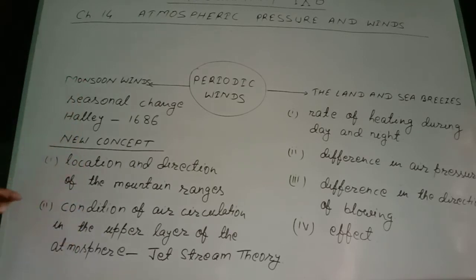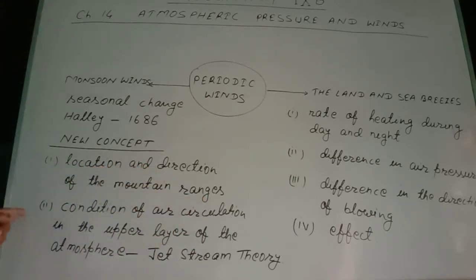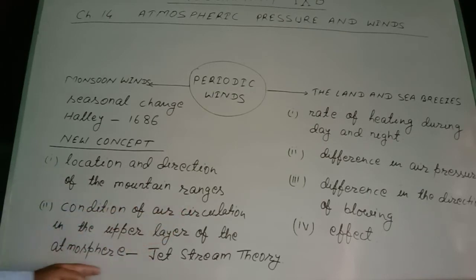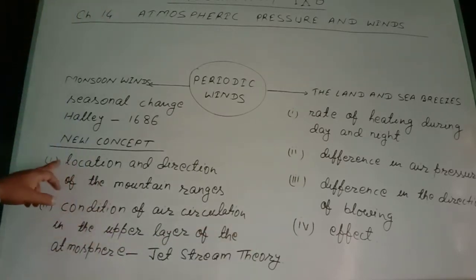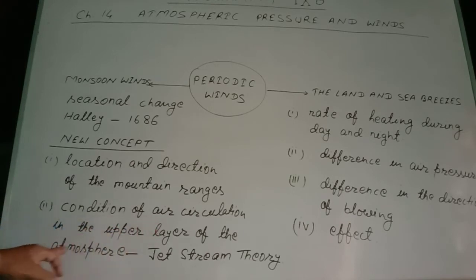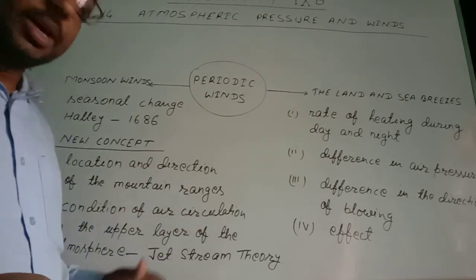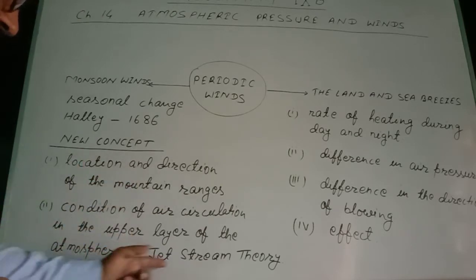A new concept has been given, based on two factors: first, the location and direction of mountain ranges; and second, the condition of air circulation in the upper layer of the atmosphere, that is the jet stream. The main factor is the condition of air circulation in the upper layer of the atmosphere — the jet stream theory. This is the new concept. In the next part we will discuss this jet stream theory.